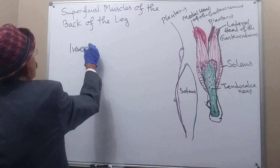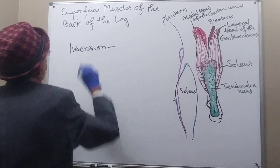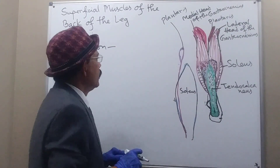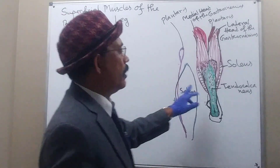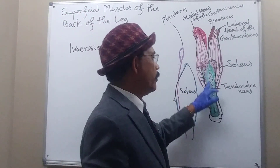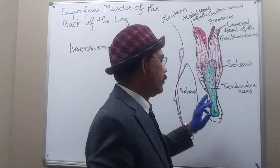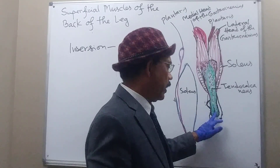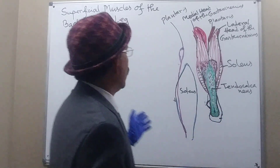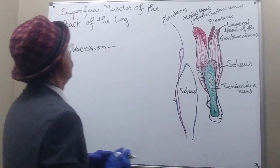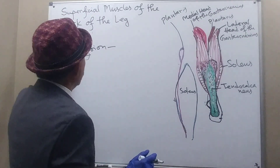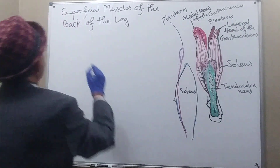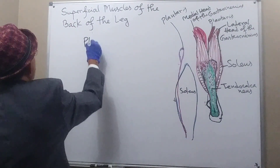The insertion of the soleus is, like the gastrocnemius, via the tendo Achilles to the posterior one-third of the calcaneum. Now we move to the plantaris.